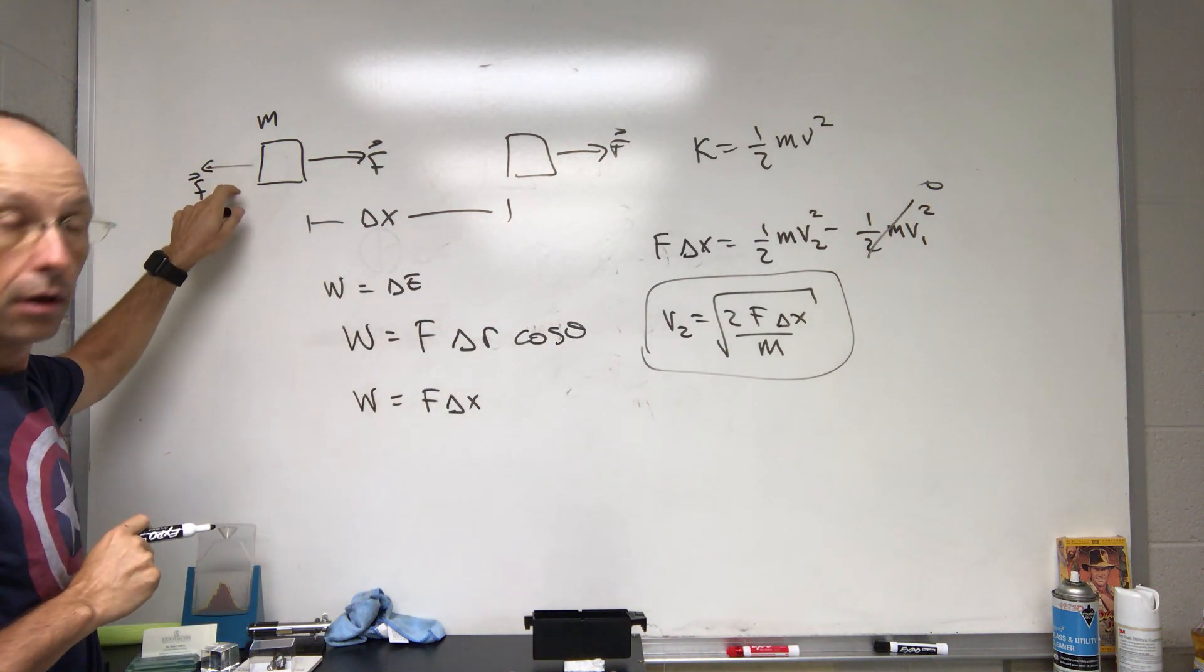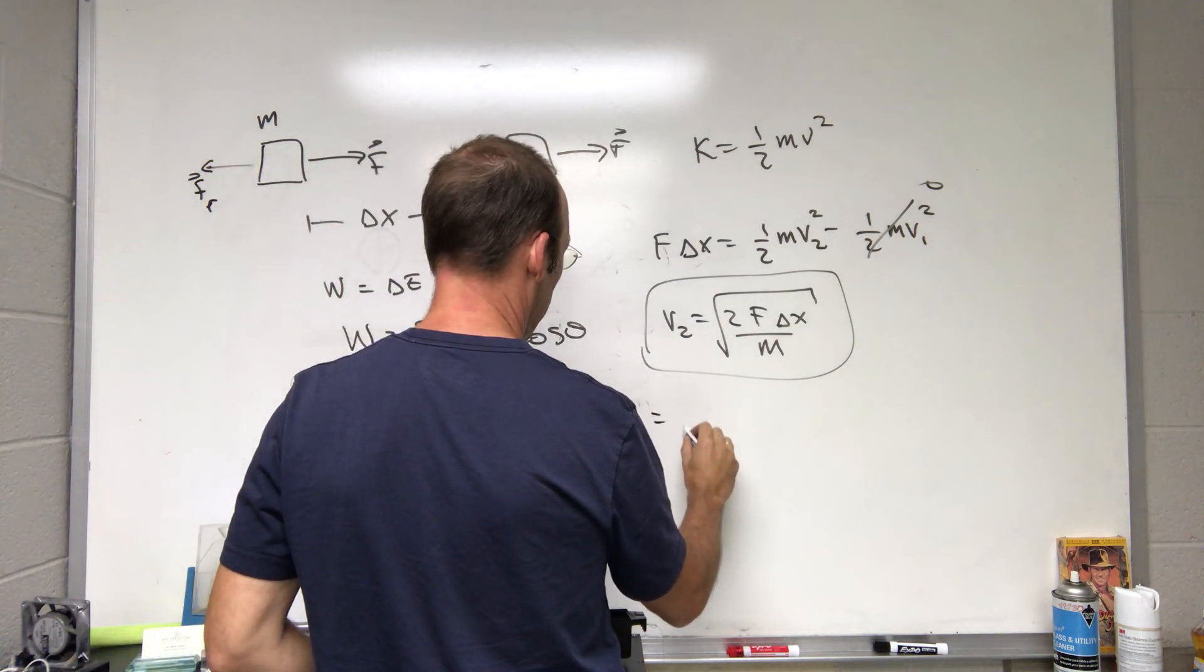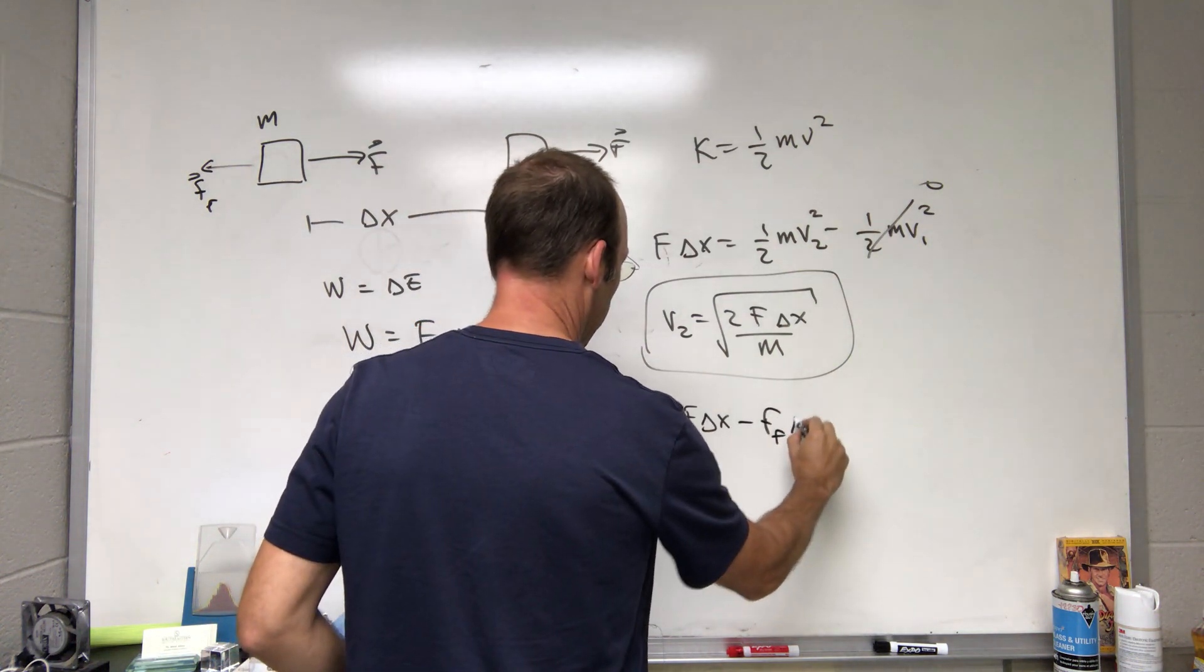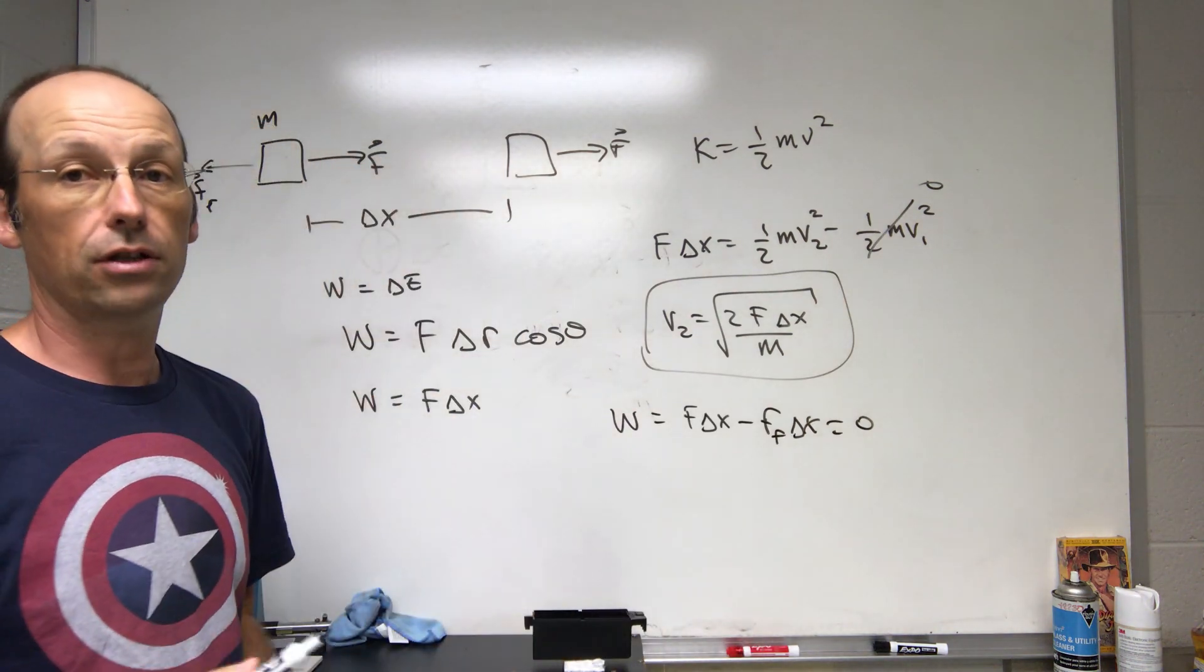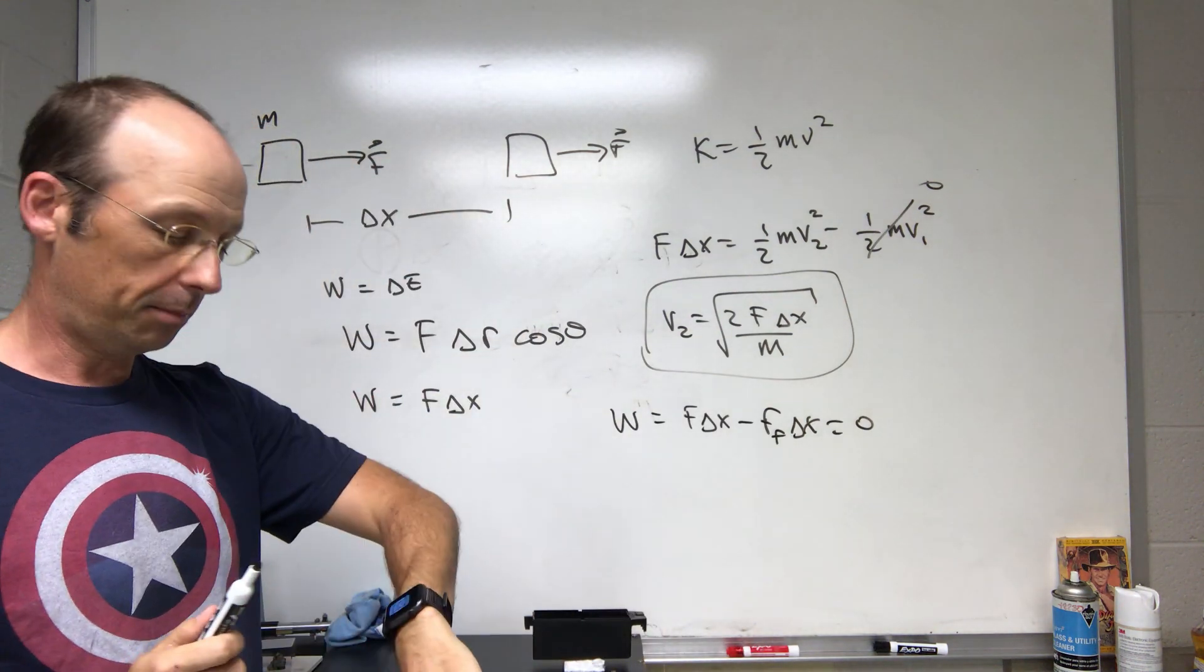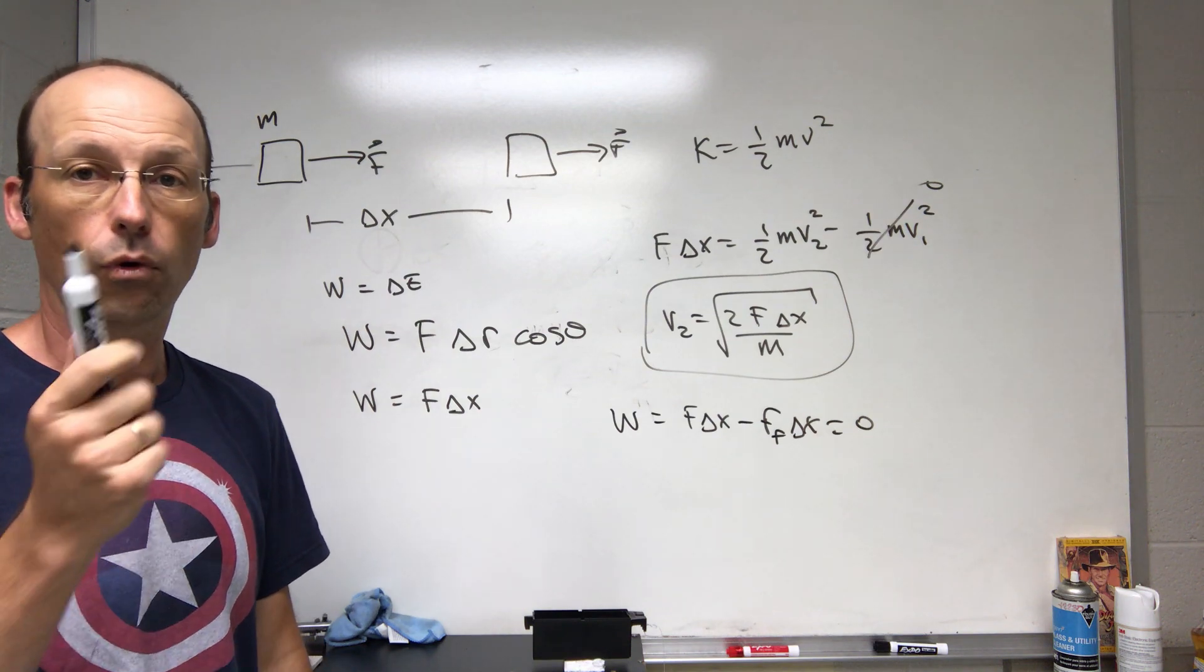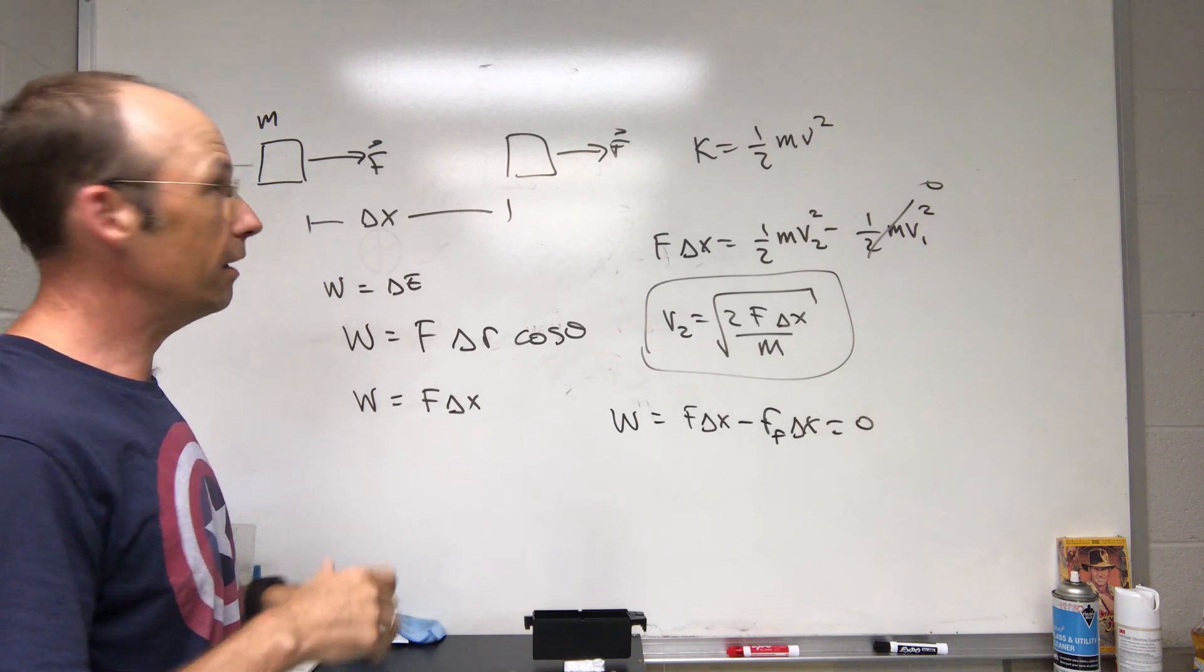The total work would technically be F Delta x minus F friction Delta x, which equals zero. So there'd be no change in kinetic energy and it moves at constant speed and everyone's happy, right? Or not, because there's a problem.